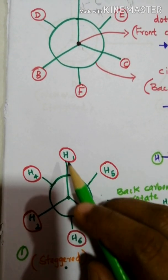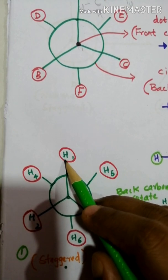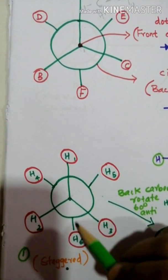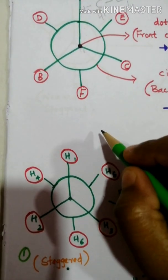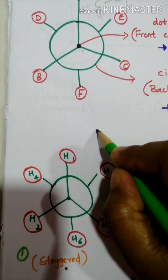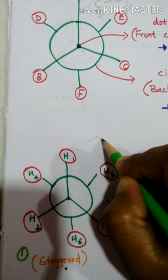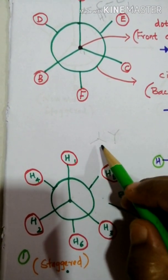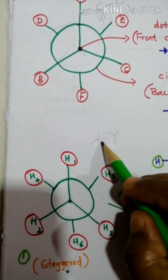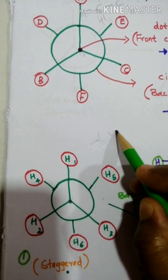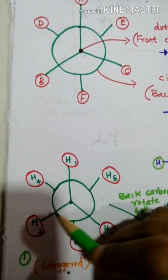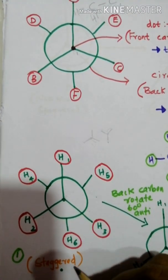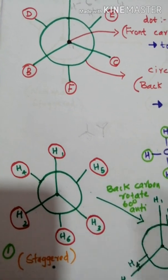You can identify the staggered conformation by the Y and inverted-Y pattern. If a Y geometry and an inverted-Y geometry are present in the same compound, it is said to be in the staggered form.